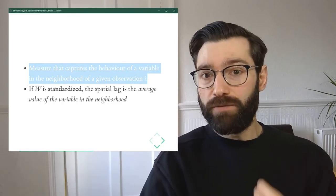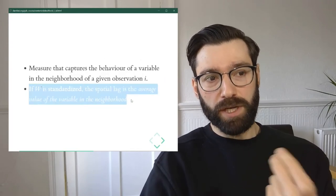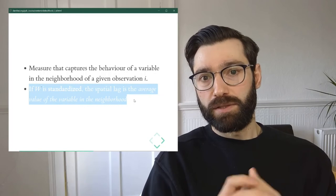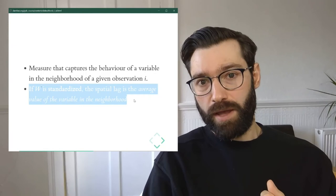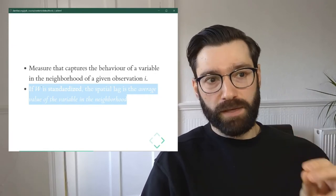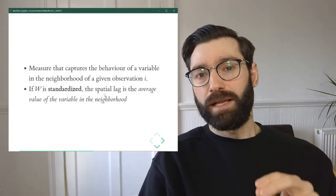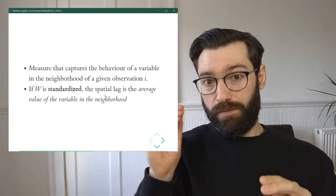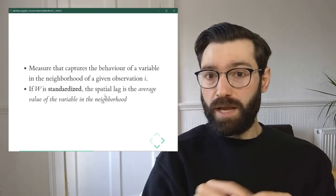And another very useful thing, which if you remember when we introduced spatial weights matrices, we said sometimes you may want to standardize the weights. This is one of the reasons why. Because if the weights, if W is row standardized, then the spatial lag becomes the average of that variable that we've used to create it in the surrounding, in the neighborhood.